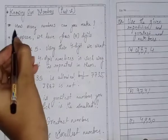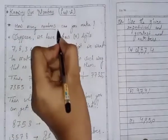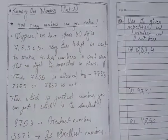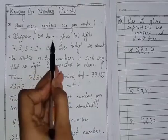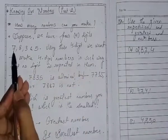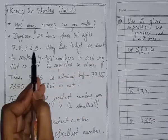Now today we will talk about how many numbers can you make. This is our topic for today. Like suppose we have 4 digits: 7, 8, 3 and 5.